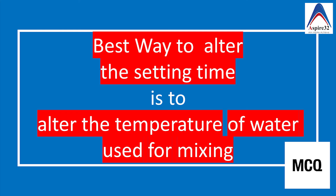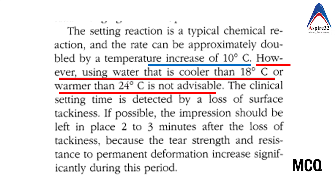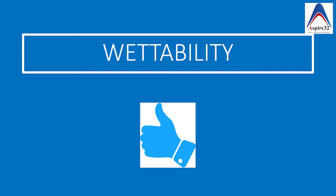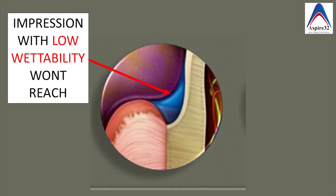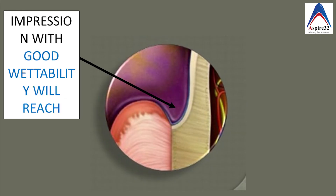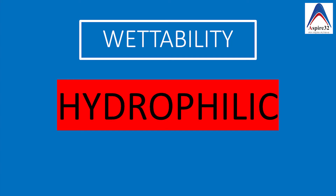The second property is wettability, which is very good with alginate. This indicates that if we use this material and the area of impression has some amount of water, the impression will be recorded properly in spite of the presence of water. That's possible because alginate and agar are both hydrocolloids which are inherently hydrophilic in nature.